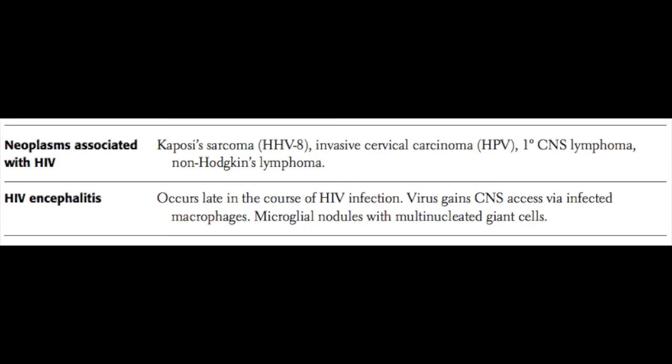There are also neoplasms associated with HIV: Kaposi's sarcoma caused by HHV-8, invasive cervical carcinoma caused by HPV, primary CNS lymphomas, and non-Hodgkin's lymphoma. HIV encephalitis occurs late in infection and is used on the boards to indicate a late AIDS picture. The virus gains CNS access via infected macrophages, producing microglial nodules with multinucleated giant cells in the brain.